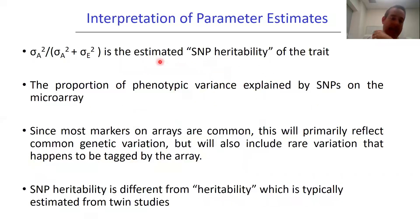we get estimates of those variance components. If we put the additive genetic variance over the sum of the additive genetic variance plus the residual variance, σ²_A/(σ²_A + σ²_E), that gives us an estimate of the SNP heritability of the trait. This is the proportion of phenotypic variance explained by SNPs on the microarray.